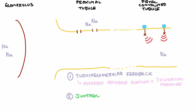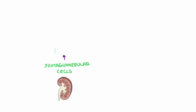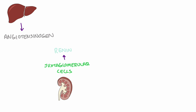Secondly, macula densa cells also activate juxtaglomerular cells, which causes the enzyme renin to be released into the bloodstream. When renin is released into circulation from juxtaglomerular cells, it travels in the blood where it functions to activate a globular protein secreted from the liver called angiotensinogen.